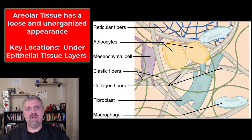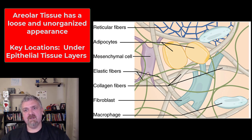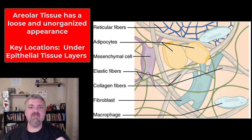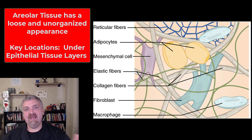Areolar tissue fills in the spaces between muscle cells, but it's the least important of the three. So those are your three types of loose connective tissue: adipose tissue, reticular tissue, and areolar tissue. I hope this helps — have a wonderful day. Be blessed.